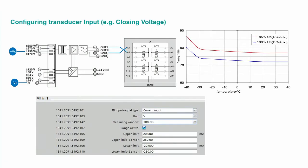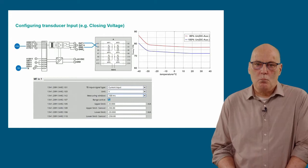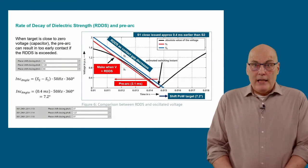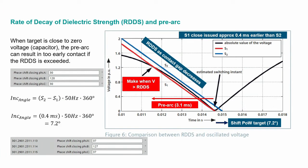The transducer inputs for compensation are configured in the normal manner. Set the scaling parameters according to the transducer rating and be sure to select current or voltage as the input signal depending on the nature of the transducer signal. A final aspect before Chapter 3 is the rate of decay of dielectric strength, simply called RDDS. This can be of importance for some applications, especially for capacitor load closing.